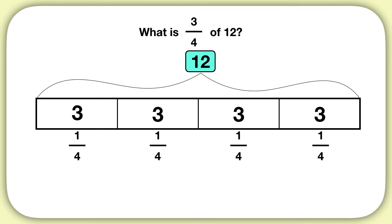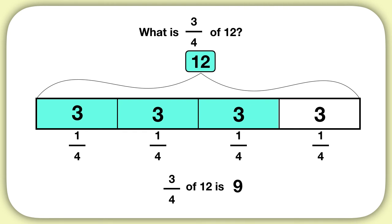So one-fourth of twelve is three. But we want to find, what is three-fourths of twelve? So we need to look at three of these pieces together. Three plus three plus three is nine. So three-fourths of twelve is nine.